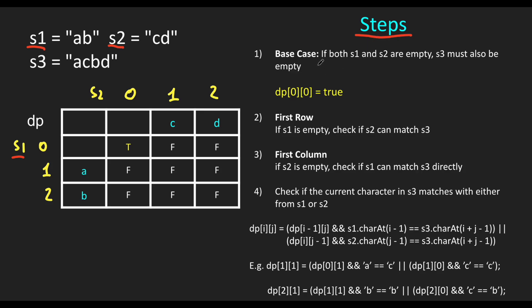What would be the base case here? If S3 is empty, we can form an empty S3 from empty S1 and S2. So we create a two-dimensional array DP with the size of S1 and S2, storing all our sub-problems. DP[0][0], which means both S1 and S2 are empty, is set to true.